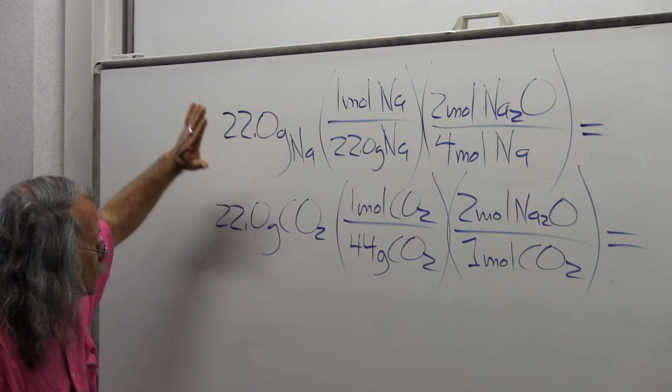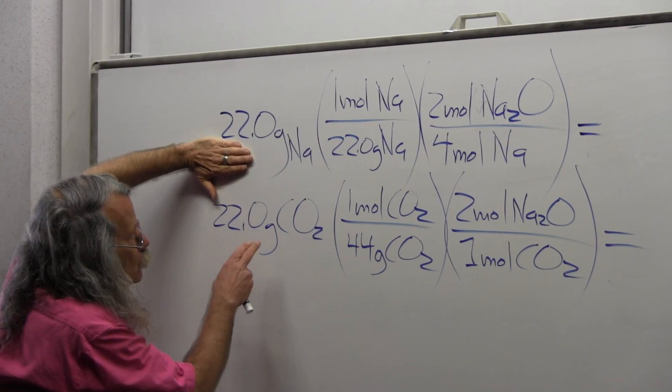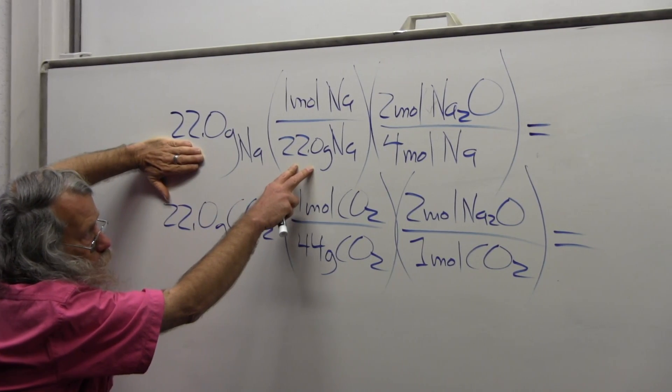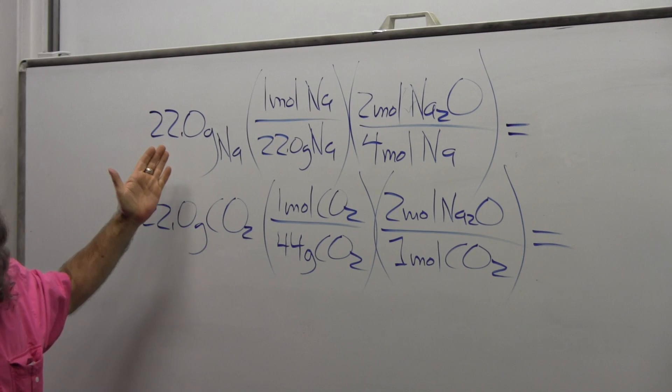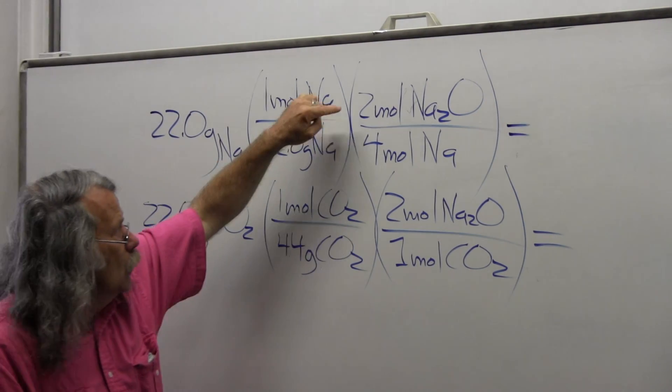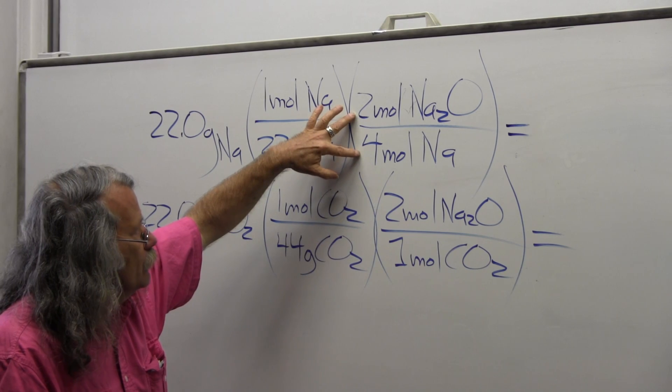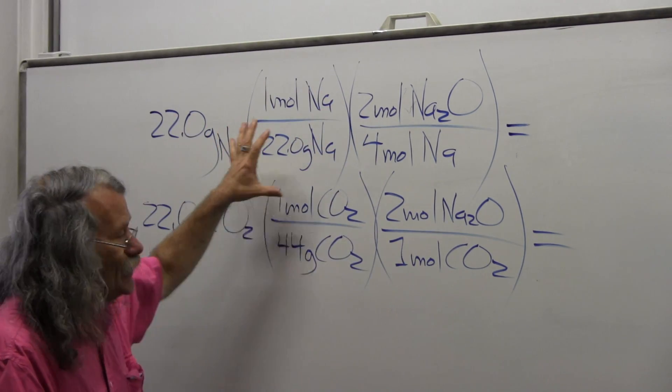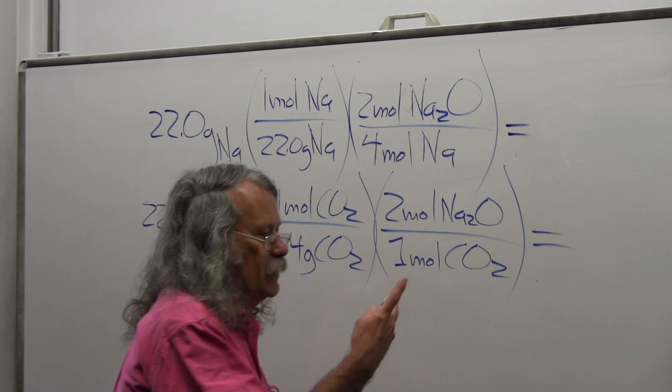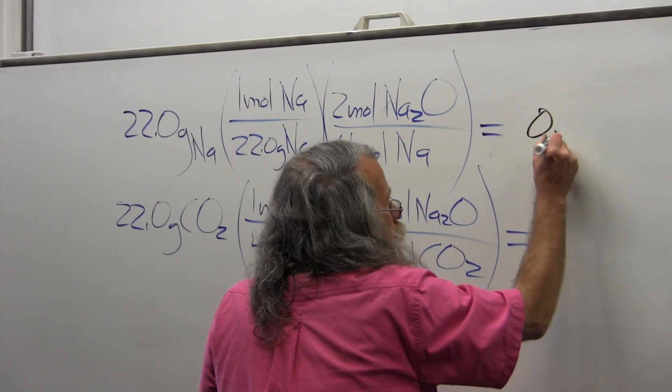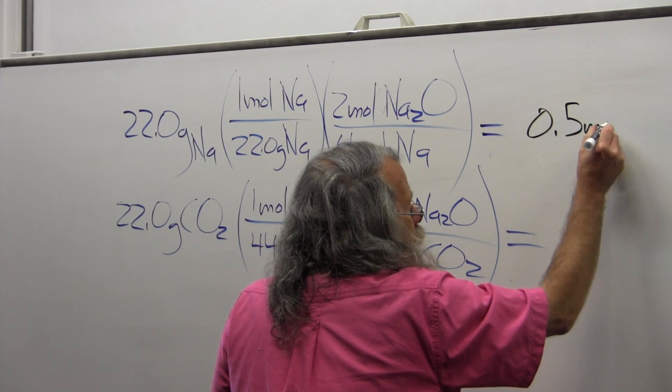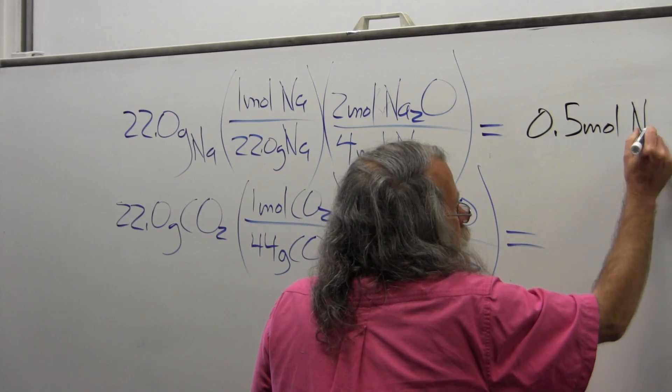I take the first part: 22 grams divided by 22 grams per mole, that's one. Two moles divided by four moles in the second term is one half. So one times one half gives me 0.5 moles of sodium oxide.